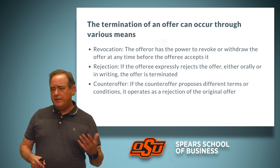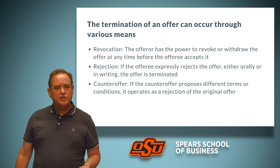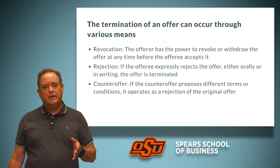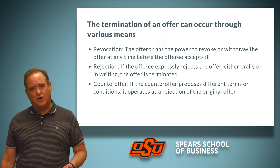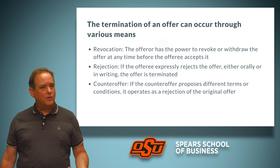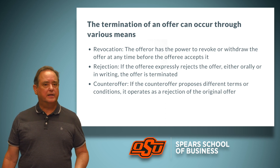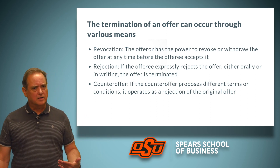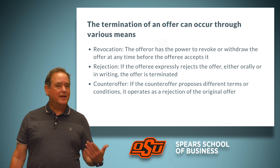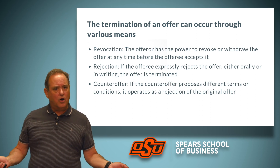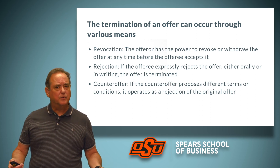Another way that an offer can terminate is through rejection. If the offeree expressly rejects the offer, either orally or in writing, the offer is terminated. So if I say I will buy your computer for $500 and you say no, that offer is gone — it's terminated, it's off the table.